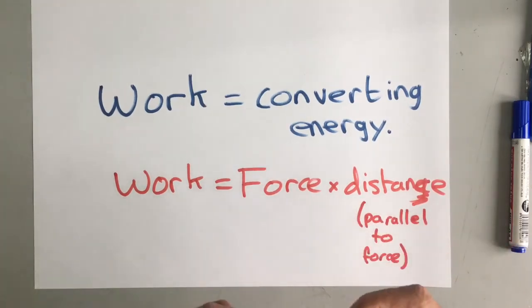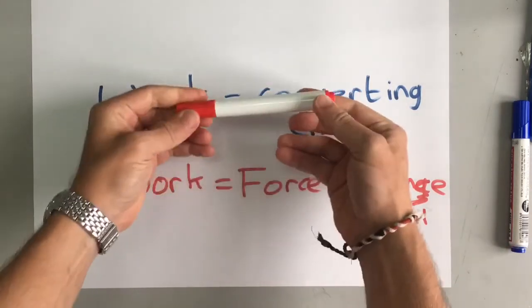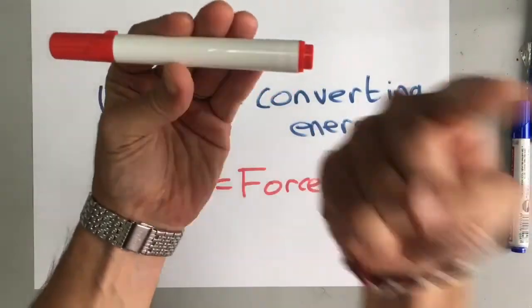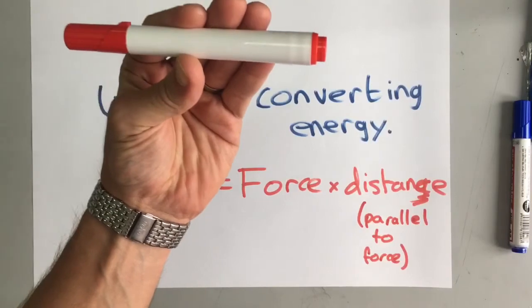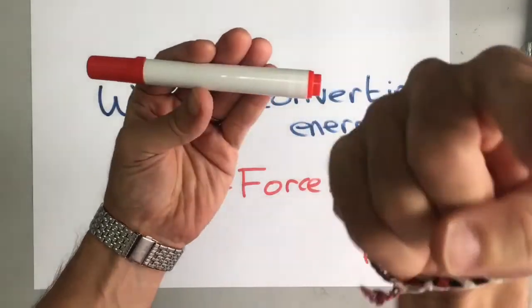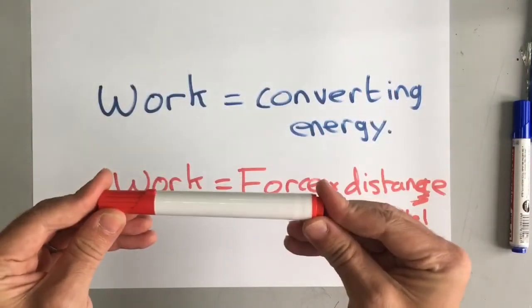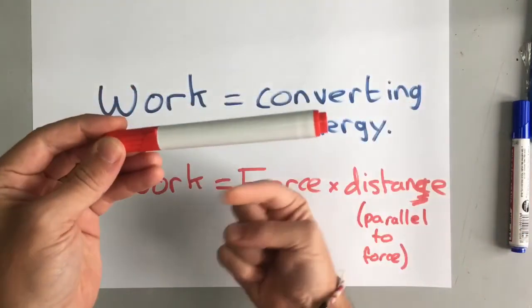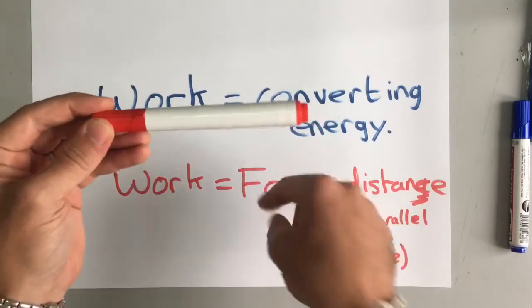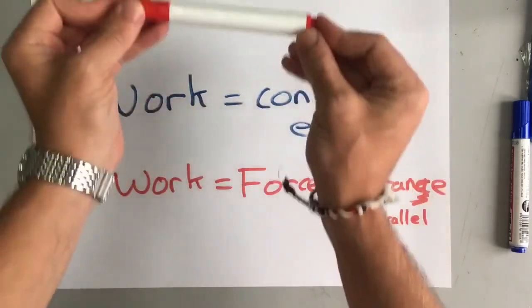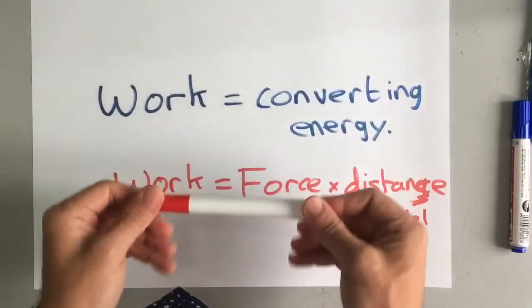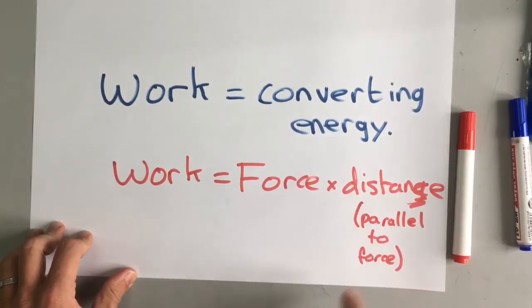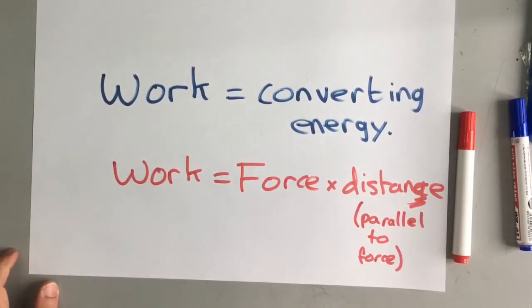For example, if I lift this pen up, I'm going against gravity. The force is going this way and the distance is going this way. So I'm doing work against gravity. However, if I move it this way, I'm doing no work against gravity because it's not moving parallel to the force of gravity. I am doing work against air resistance and stuff like that, but not against gravity. So the distance has to be parallel to the force.